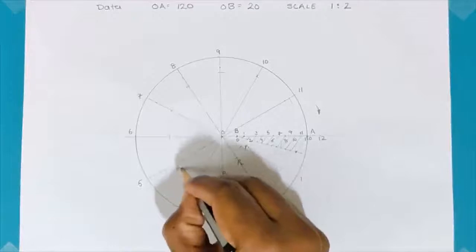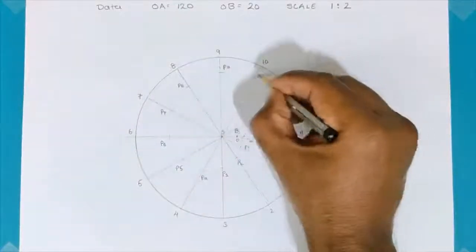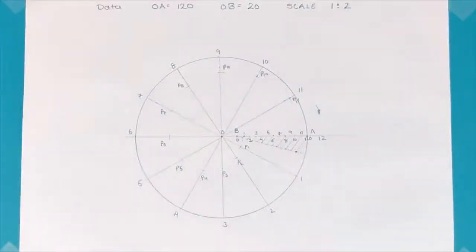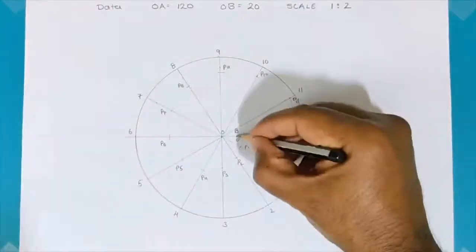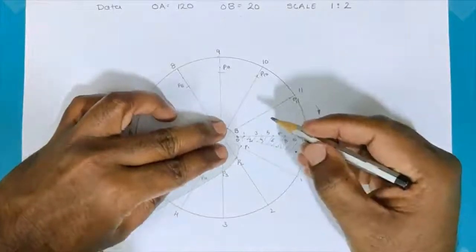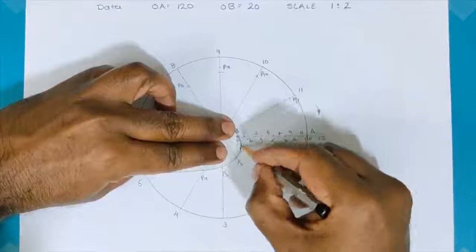12 is on the circle itself. So, remember, radius I am taking about pole O to the respective points and marking on the line with the respective numbers. Now, with B as the starting point, I draw a curve passing through all the points I have found.